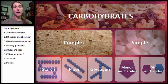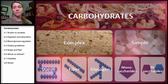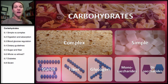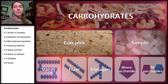The simple carbohydrates contain monosaccharides and disaccharides. Mono means one — so this is just one sugar — and disaccharide means two sugars. Think of 'saccharide' as sugar. The complex carbohydrates include starch, fiber, and glycogen.